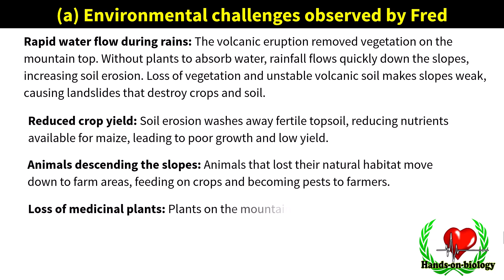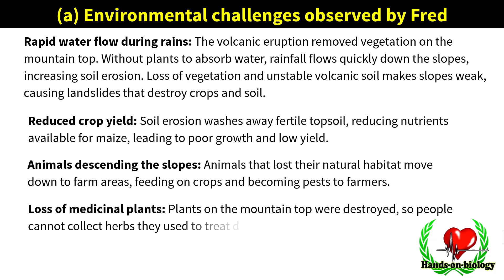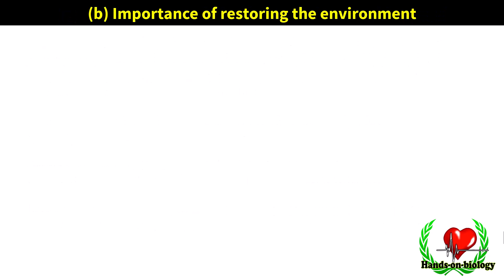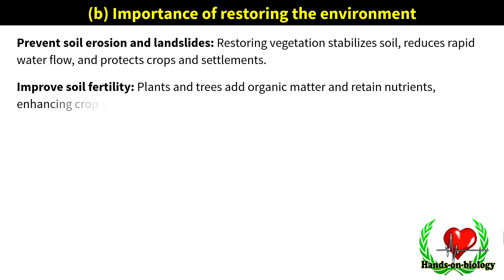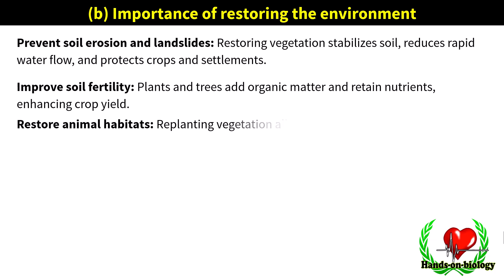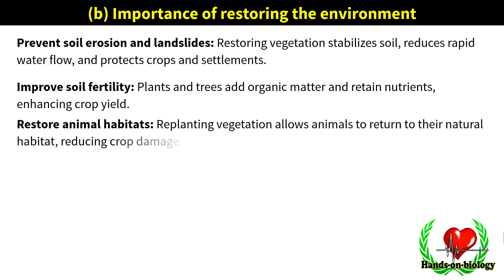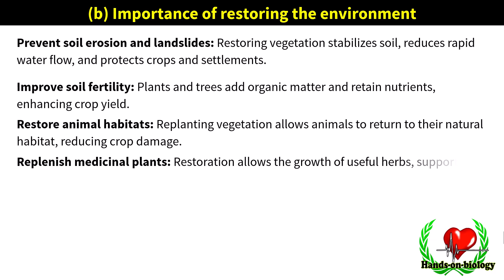Loss of medicinal plants: plants on the mountaintop were destroyed, so people cannot collect herbs they use to treat diseases, affecting community health. Importance of restoring the environment: restoring vegetation stabilizes soil, reduces rapid water flow, and protects crops and settlements. Plants and trees add organic matter and retain nutrients, enhancing crop yield. Replanting vegetation allows animals to return to their natural habitat, reducing crop damage. Restoration allows the growth of useful herbs, supporting community health and traditional medicine.